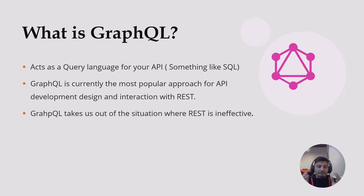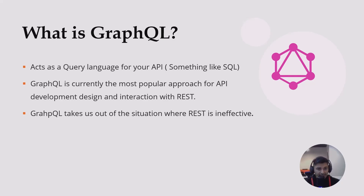GraphQL acts as a query language for your API. You can compare it with structured query language, SQL in short. SQL is a query language for our databases — we have tons of tables and databases, and we query to retrieve the information we want. But from the GraphQL perspective, the source is actually the API itself. We want to get different attributes from the same endpoint, different variations of the same API, and GraphQL helps us to do this.